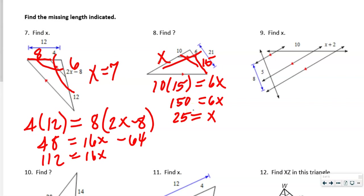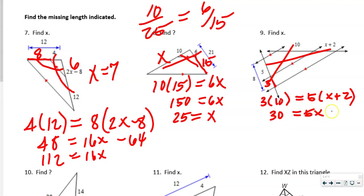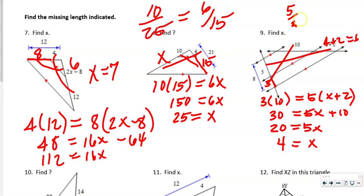You could check: 10 over 25 equals 6 over 15 — yes it does. For the next problem, we find the missing length first: that's 3. Cross-multiplying: 3 times 10 = 5 times (x plus 2), giving 30 = 5x plus 10. Subtracting 10: 5x = 20, so x = 4. And 4 plus 2 = 6. Check: 5 over 3 equals 10 over 6.